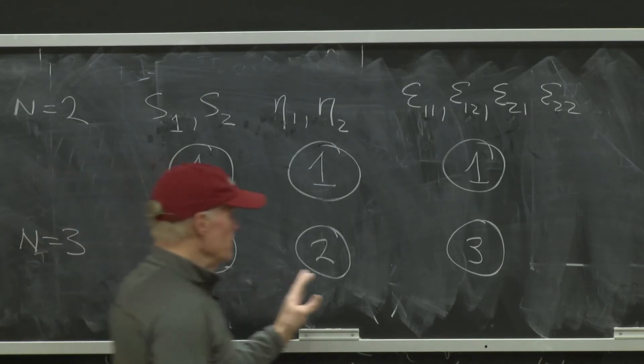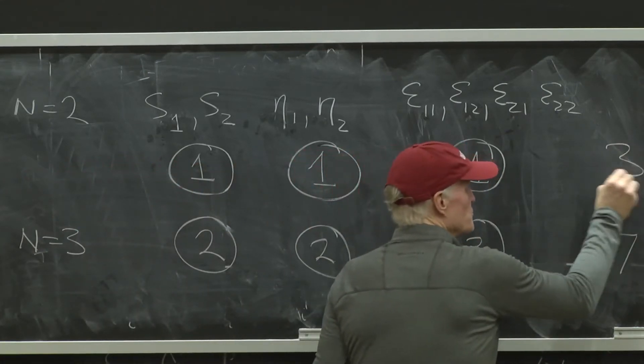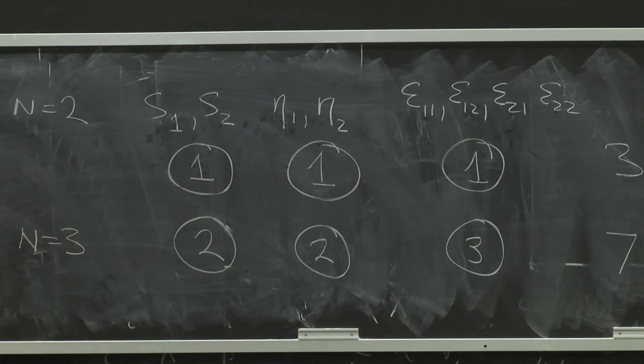Which non-trivially means there's now seven parameters here versus only three here. So when I went from two goods to three goods, the world got a lot more complicated. But it's even worse than it looks.